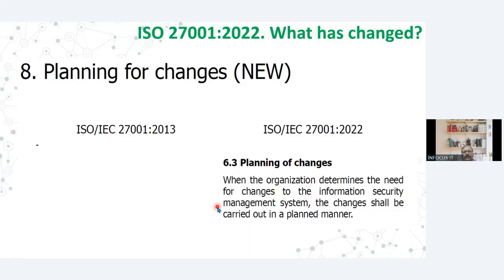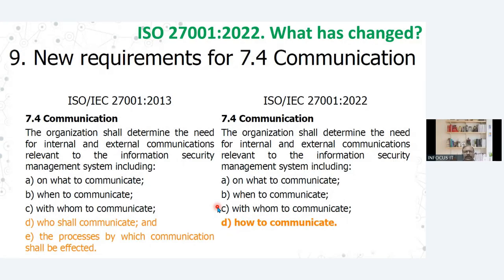Then in clause number 6.3 — 6.3 is a new addition — when the organization determines the need for changes to the information security management system, the changes shall be carried out in a planned manner. The ninth requirement is in clause number 7.4, which covers the how-to-communicate part. Earlier it said you need to make a communication plan: what to communicate, when to communicate and whom to communicate. Now the 'how' part is also added — how the communication needs to be done.